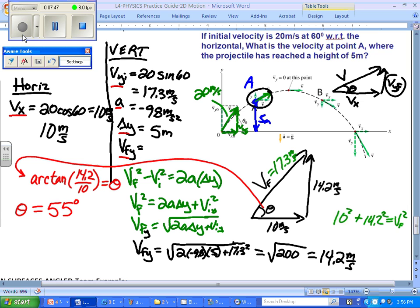So then final answer, we've got a velocity final of 17.3 at 55 degrees meters per second.